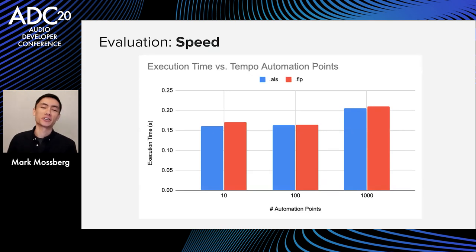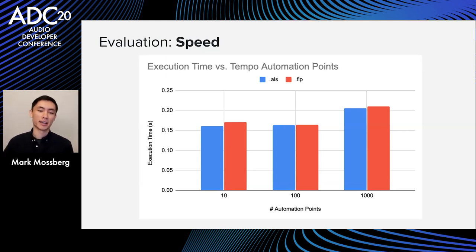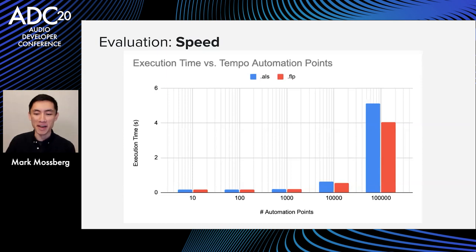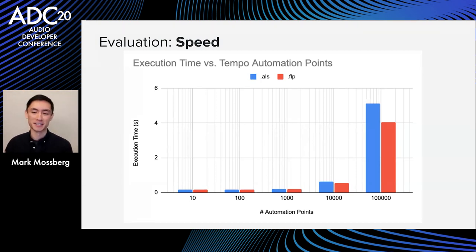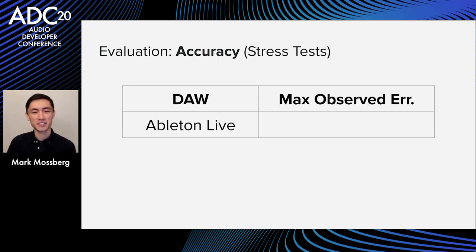For performance evaluation, I tested projects with increasing numbers of automation points. For 10 to 1,000 automation points, processing takes on the order of 200 milliseconds. With 10,000 or 100,000 points, we start to see exponential behavior — about five seconds for 100,000 points — but the DAWs don't work well at that scale anyway. It's really a stress test.